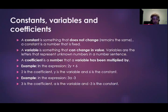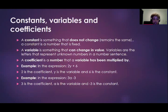Some terms you need to know related to functions and relationships are constants, variables, and coefficients. A constant is something that does not change — similar to the English meaning, it remains the same. In mathematics, a constant is a fixed number; a 3 is a 3. A variable, on the other hand, is something that can change in value — from the English word 'vary.' Variables are letters that represent unknown numbers in a number sentence and can take on any value. A coefficient is a number that a variable has been multiplied by — it is the number in front of a variable.